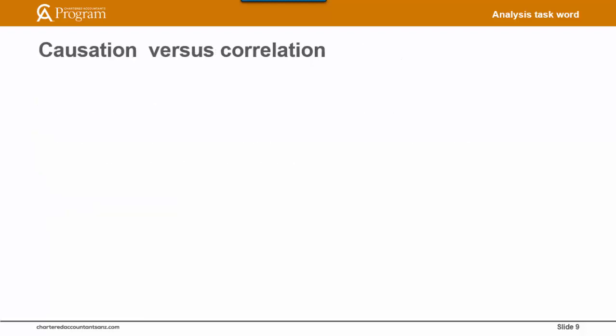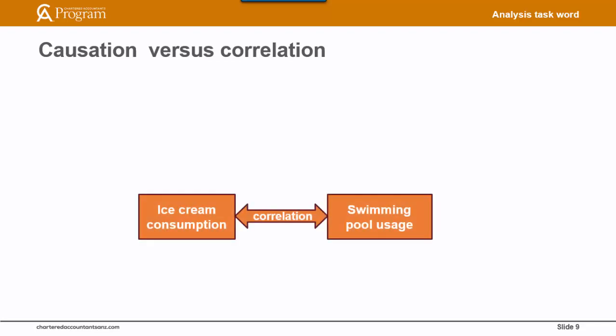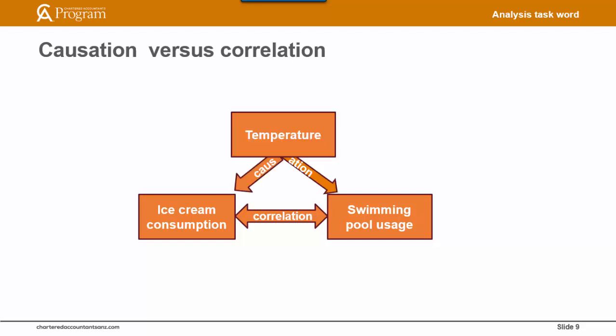Correlation is a statistic that measures the degree to which two variables move in relation to each other. Perfect correlation would be measured as one whereas no correlation would be zero. For example, there's a strong correlation between ice cream consumption and the level of swimming pool usage. But the question to ask is whether ice cream consumption causes swimming pool usage or vice versa — and the answer is neither. Even though there's a strong correlation, one variable does not cause the other to change. The cause of changes in both these variables is actually the outside temperature. So when analyzing financial performance, it is important to identify causation between the various variables, as it is this that will enable the identification of the drivers of financial performance.